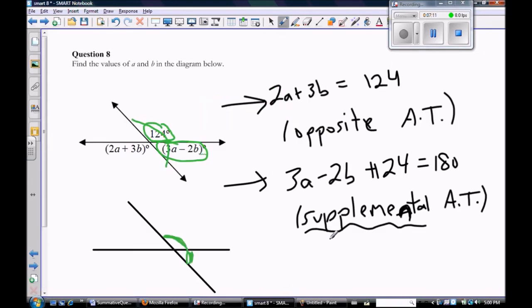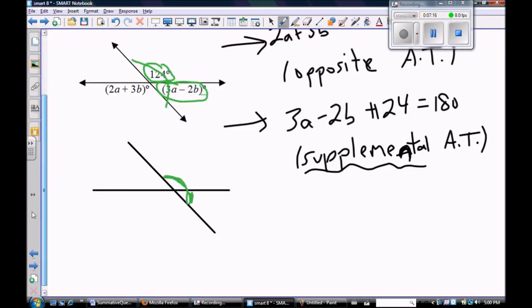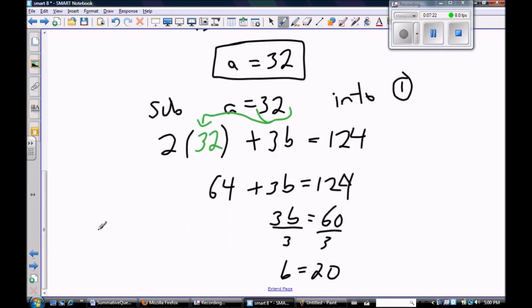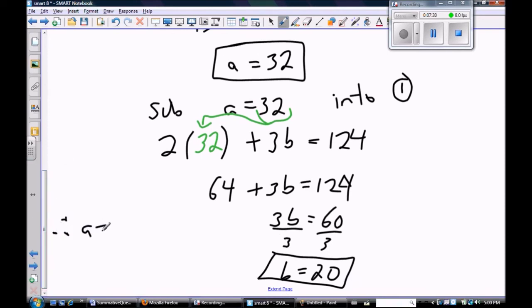And of course you might want to go back to the original question and substitute those values into check. So I do suggest you do that if this was actually for marks. But for now, I'm pretty confident that I have an answer. Put a box around my answer: a equals 32 and b equals 20. All right, that may have been my fastest video yet for you grade 10 students. I hope that was good.